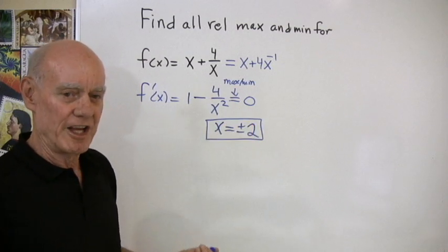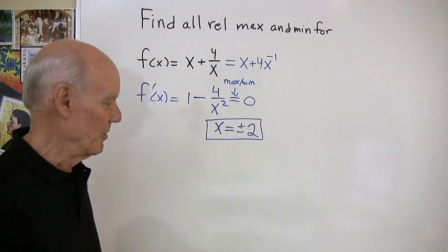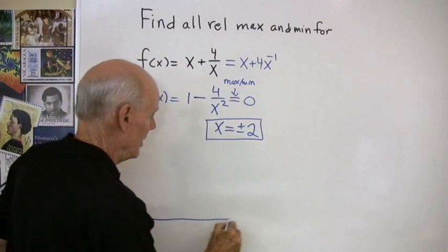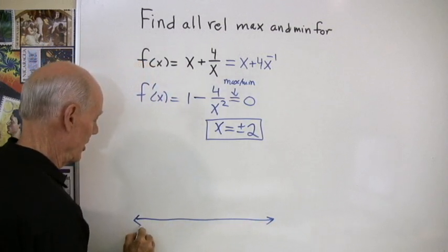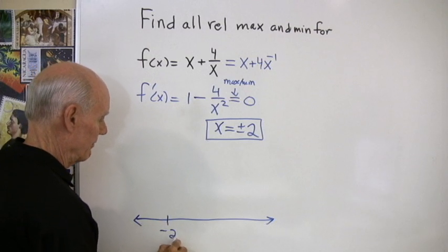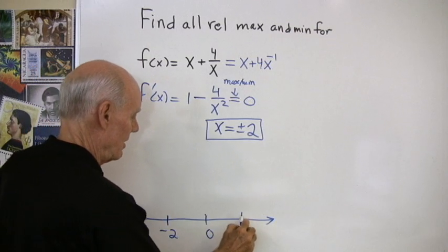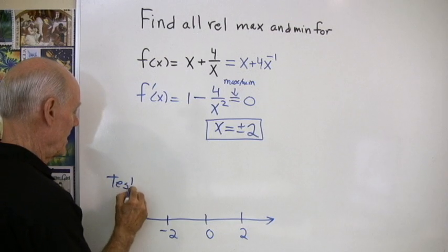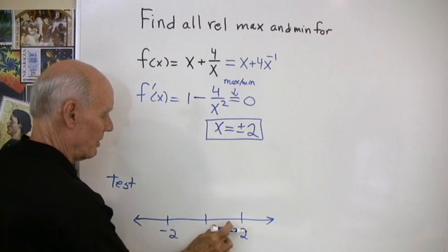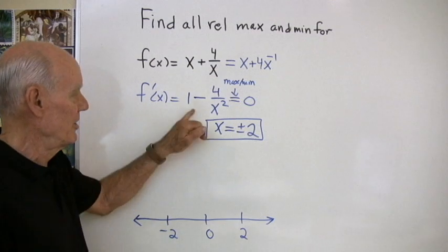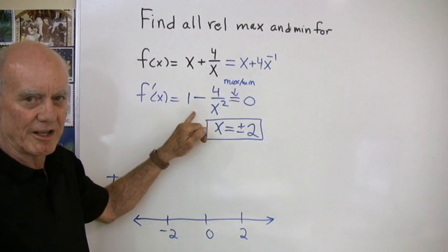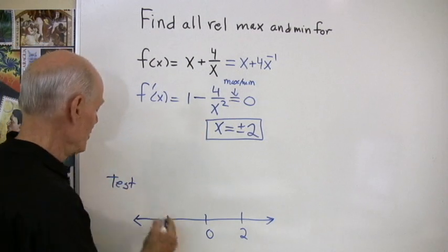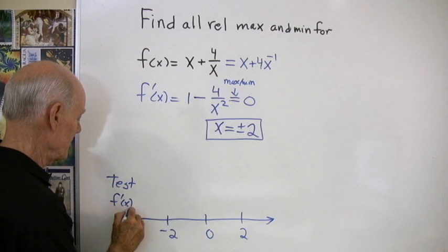Now I want to know if any of those give me a maximum or a minimum point. So I'm going to draw a little number line. I'm going to put in negative 2, 0, and 2, and then I'm going to test a point in each one of these intervals in this first derivative and see whether I get a positive or negative number.